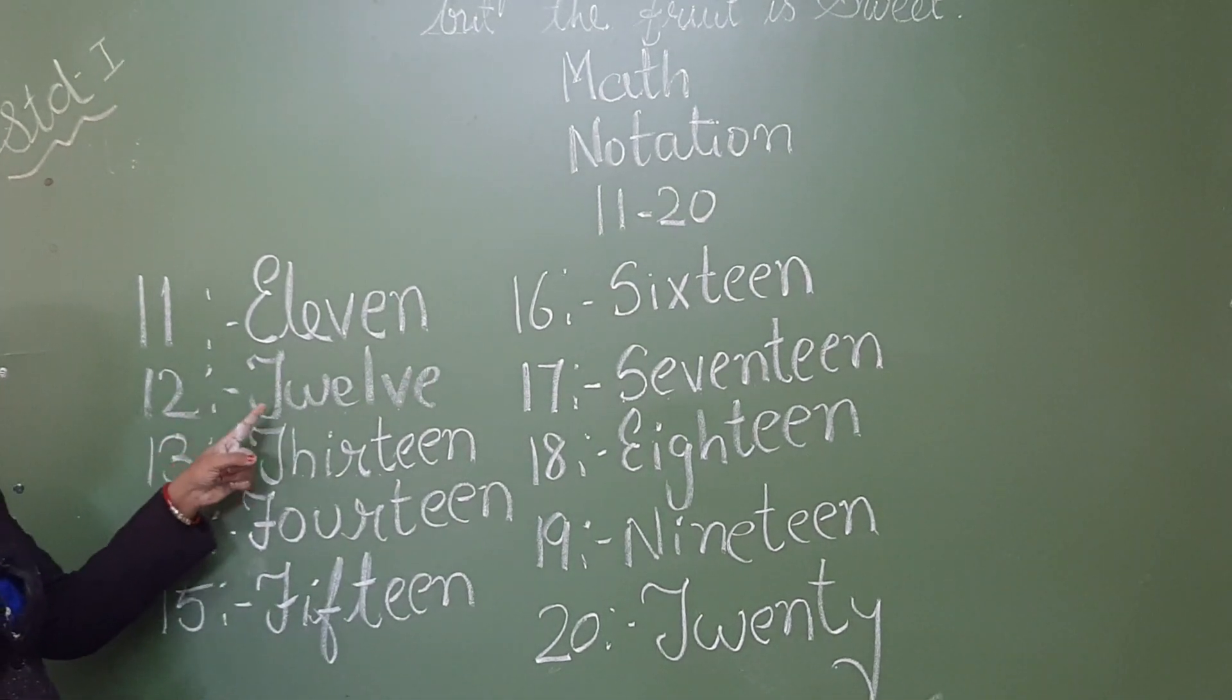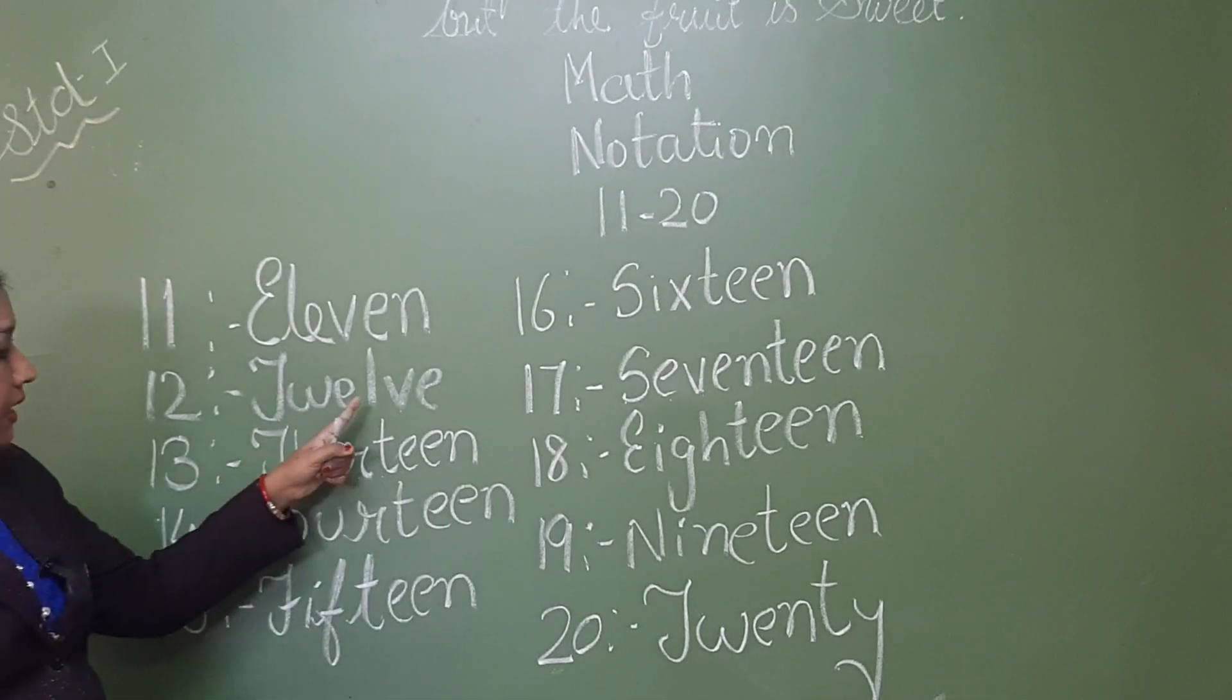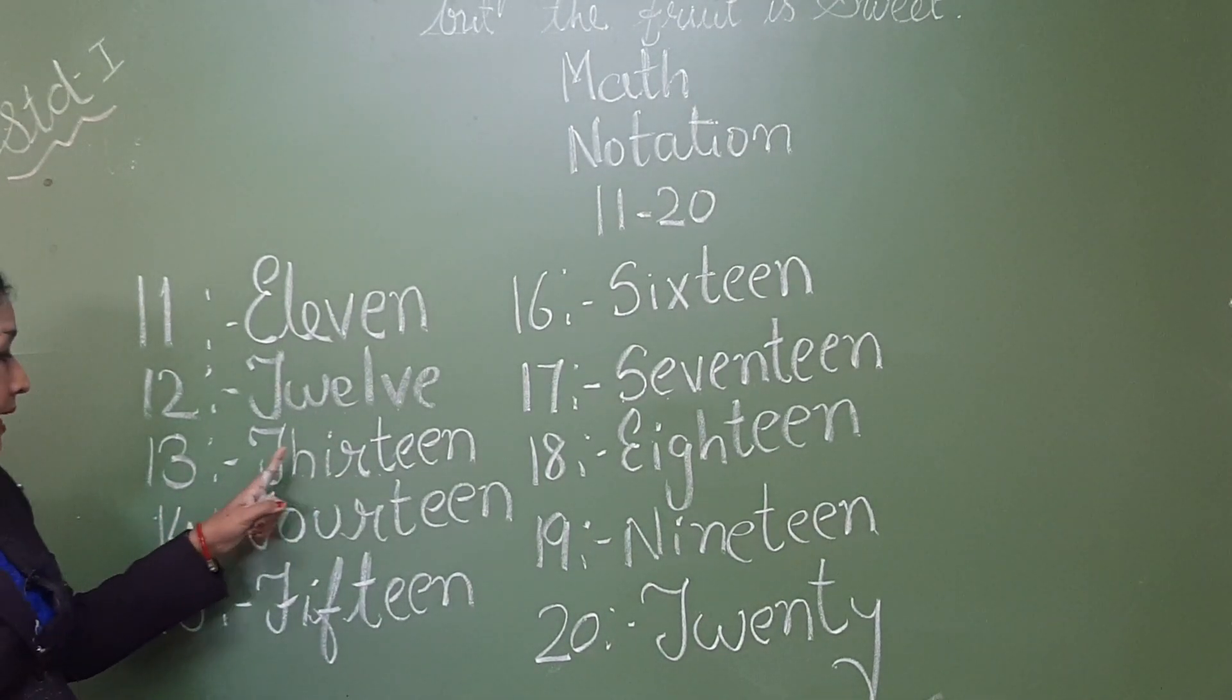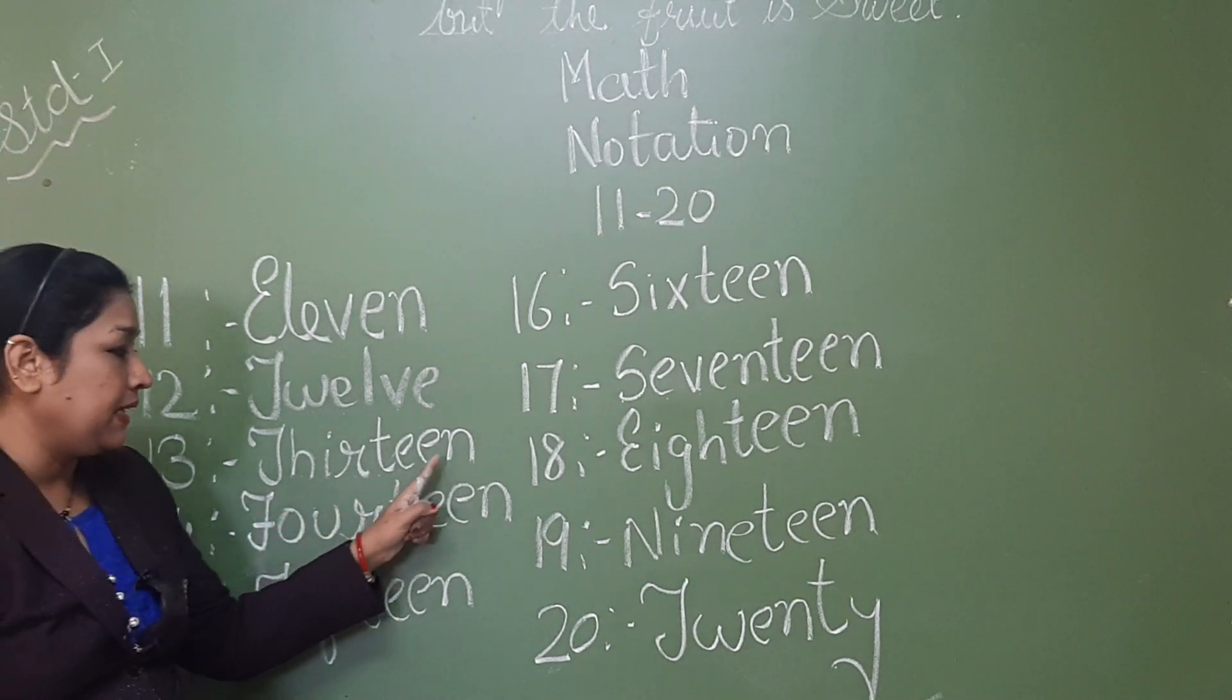1, 2, 12 and the spelling is T, W, E, L, V, E, 12. 1, 3, 13 and the spelling is T, H, I, R, T, E, N, 13.